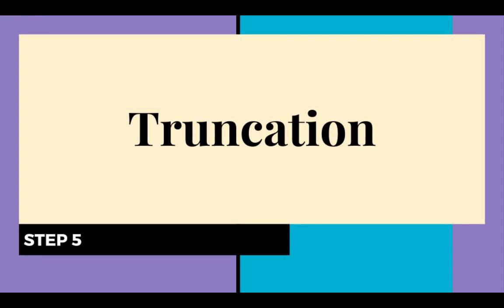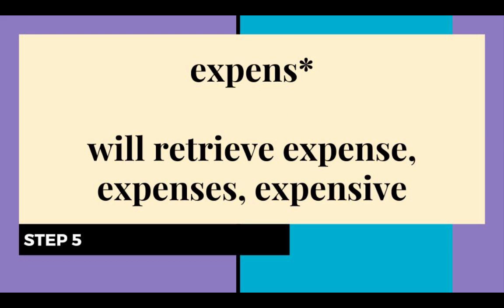Step 5. Review your search to see if you should use truncation. Truncation, using a strategically placed asterisk, will get you all forms of a word. Some databases use a different truncation indicator — consult the help screen or speak with a librarian if you are unsure. For example, putting the letters EXPENS* will retrieve expense and expenses.